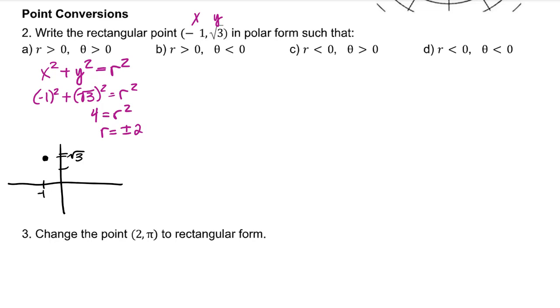And when they're looking for an r less than 0, we'll use negative 2. I also want to solve for theta. I've been given the y and the x. Tangent of theta is equal to y over x. So tangent of theta is equal to root 3 over negative 1. We're looking for the angle for which tangent of theta is equal to negative root 3. That would be at 2 pi thirds and 5 pi thirds.